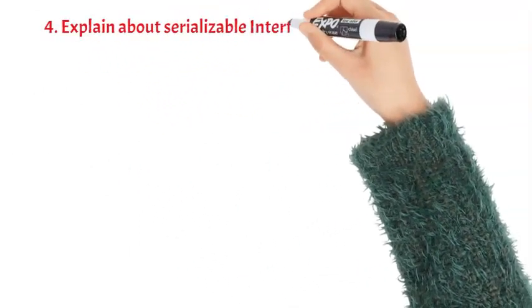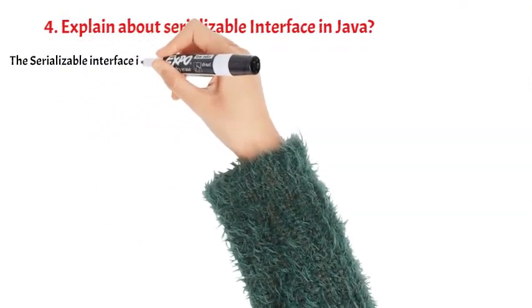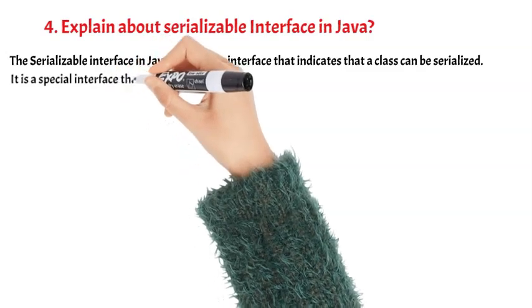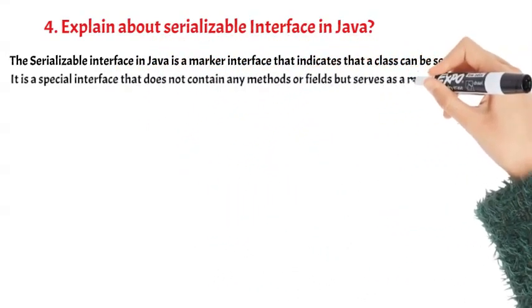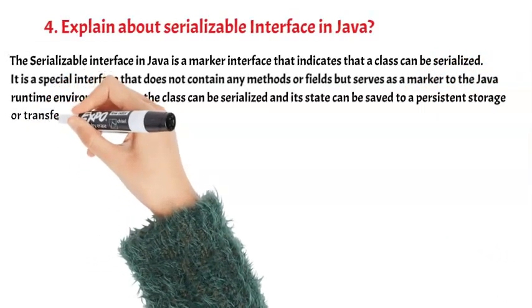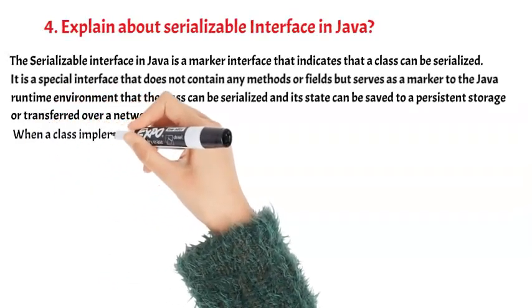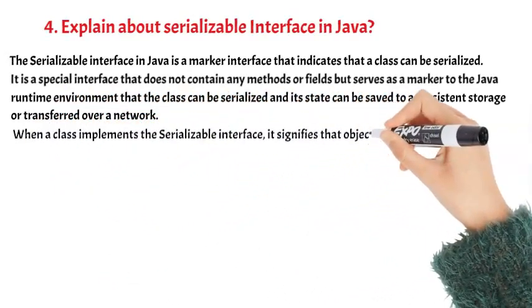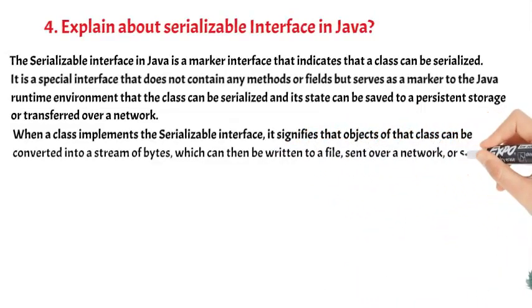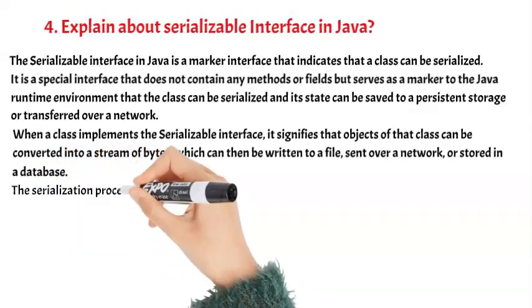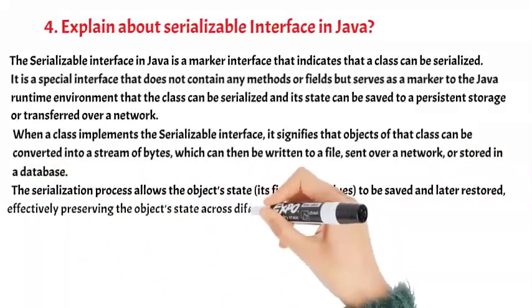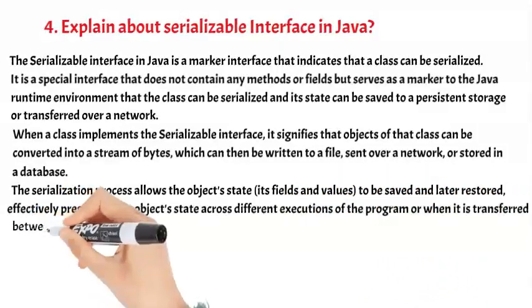Explain the Serializable interface in Java. The Serializable interface in Java is a marker interface that indicates that a class can be serialized. It is a special interface that does not contain any methods or fields, but serves as a marker to the Java runtime environment that the class can be serialized and its state can be saved to persistent storage or transferred over a network. When a class implements the Serializable interface, objects of that class can be converted into a stream of bytes, which can then be written to a file, sent over a network, or stored in a database. The serialization process allows the object's state — its fields and values — to be saved and later restored, effectively preserving the object's state across different executions of the program or when transferred between different systems.